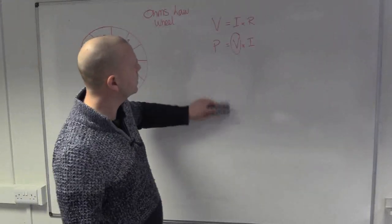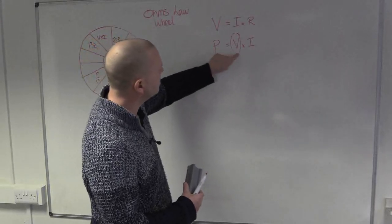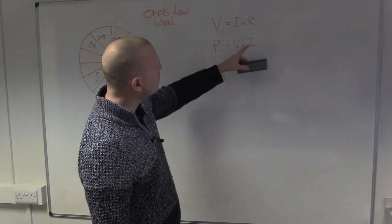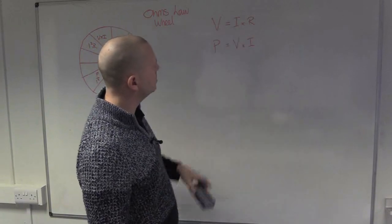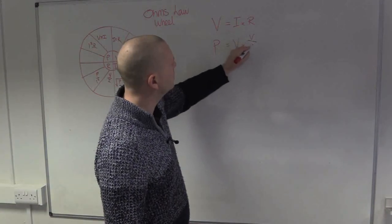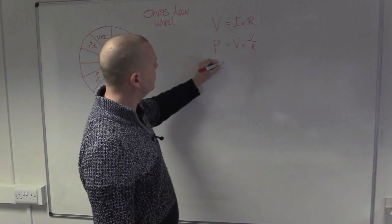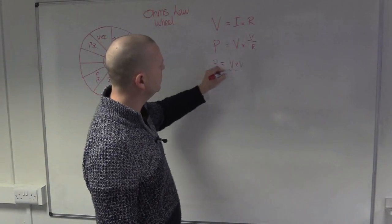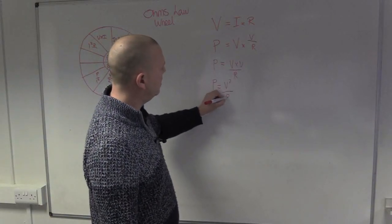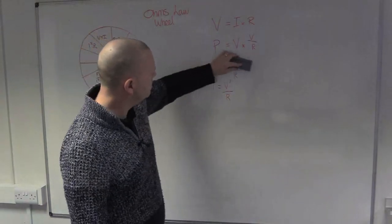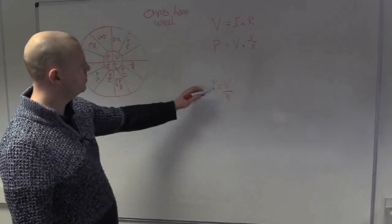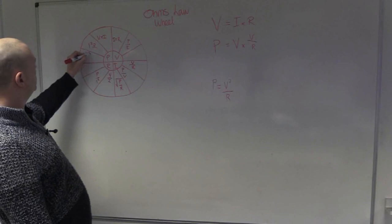Using this substitution concept again, but this time replacing current: current equals V/R. If we substitute that into P = V × I, we replace I with V/R, giving us P = V × (V/R), which simplifies to P = V²/R. That's the next equation we're going to work with.